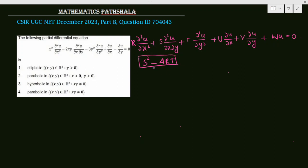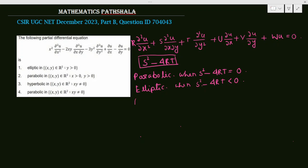The equation is parabolic when S² - 4RT = 0. The equation is elliptic when S² - 4RT < 0. And the equation is hyperbolic when S² - 4RT > 0.